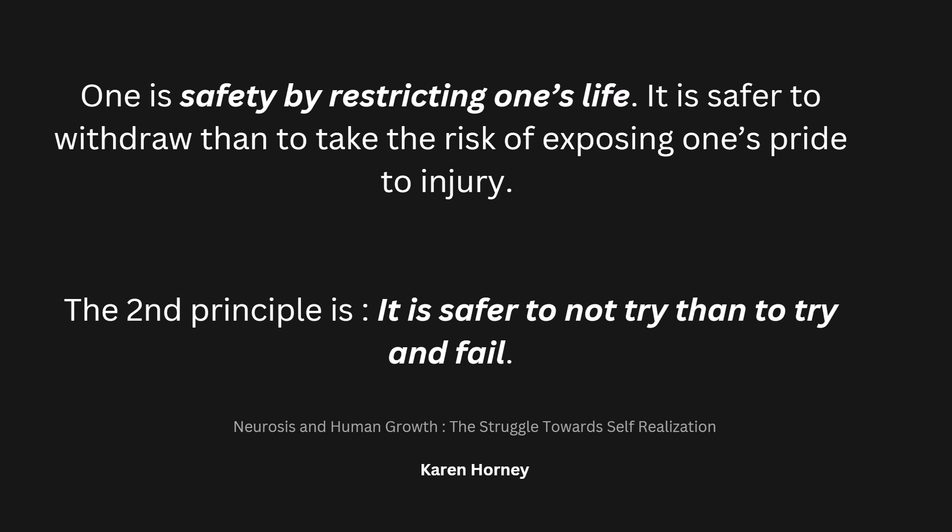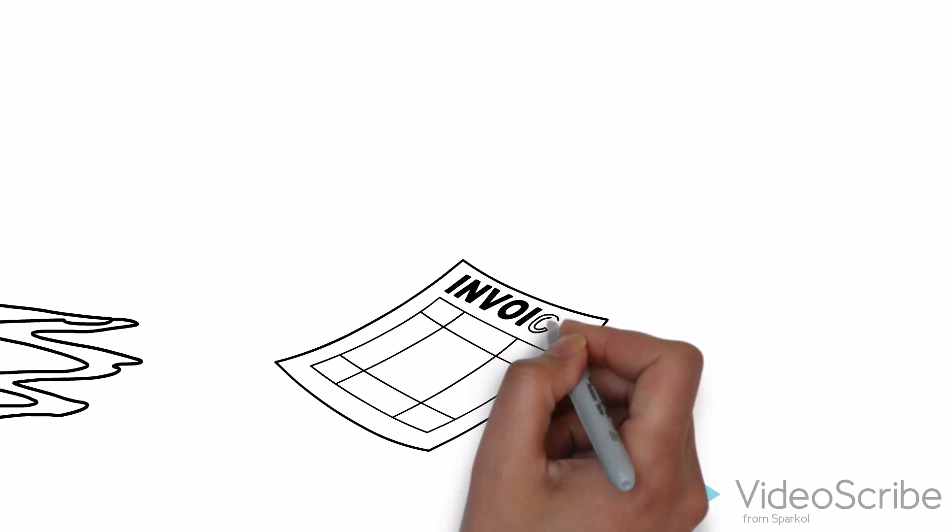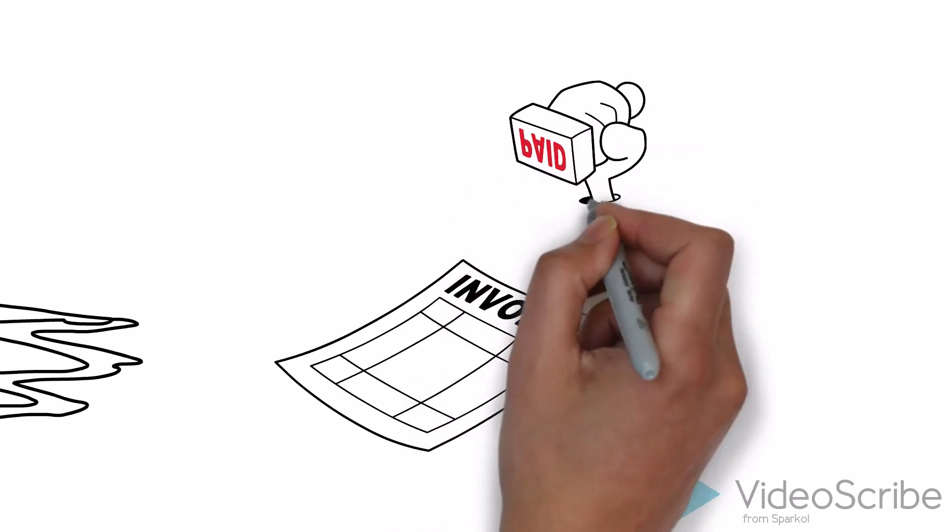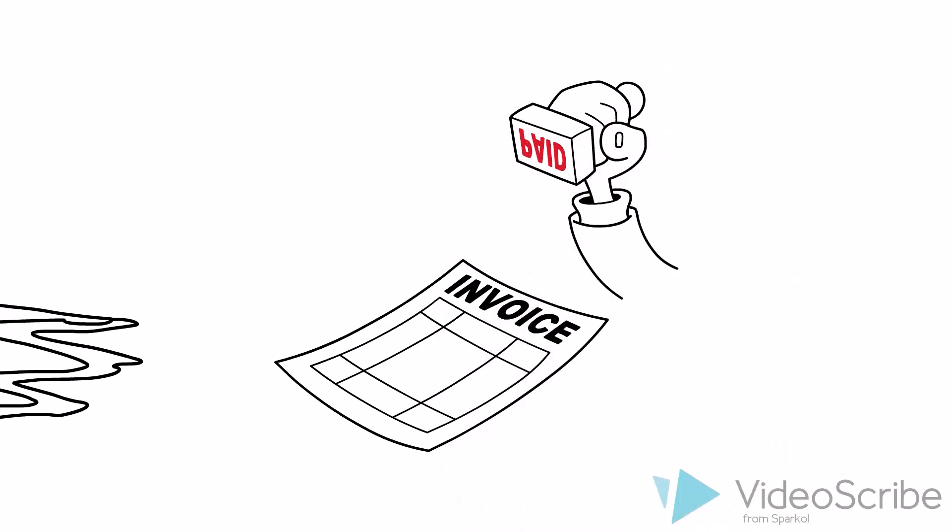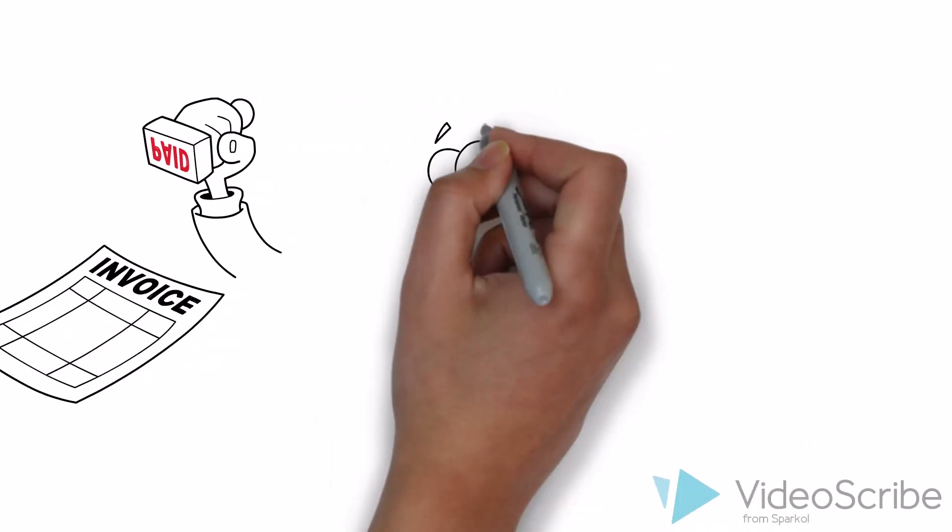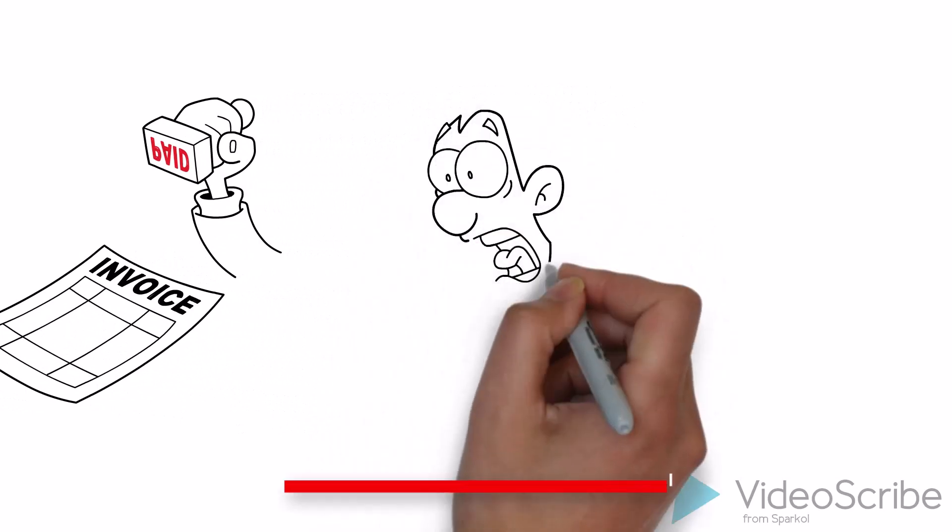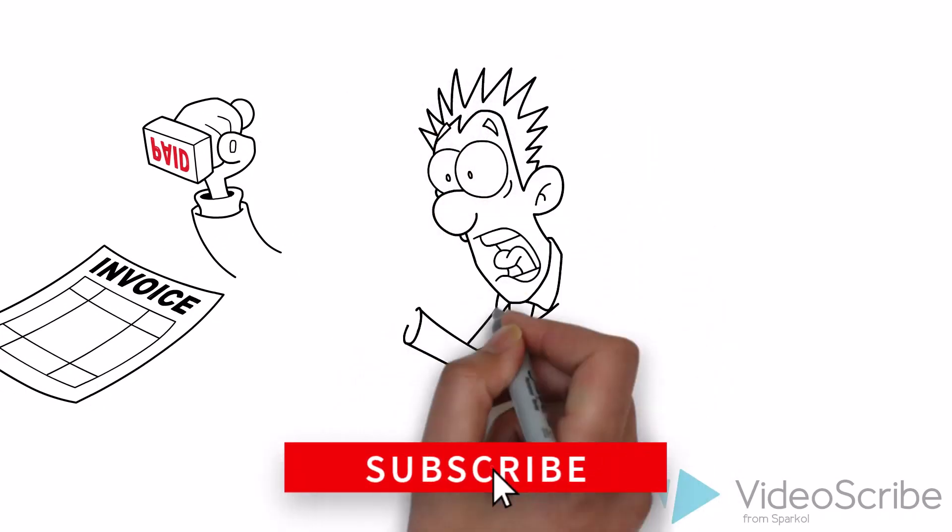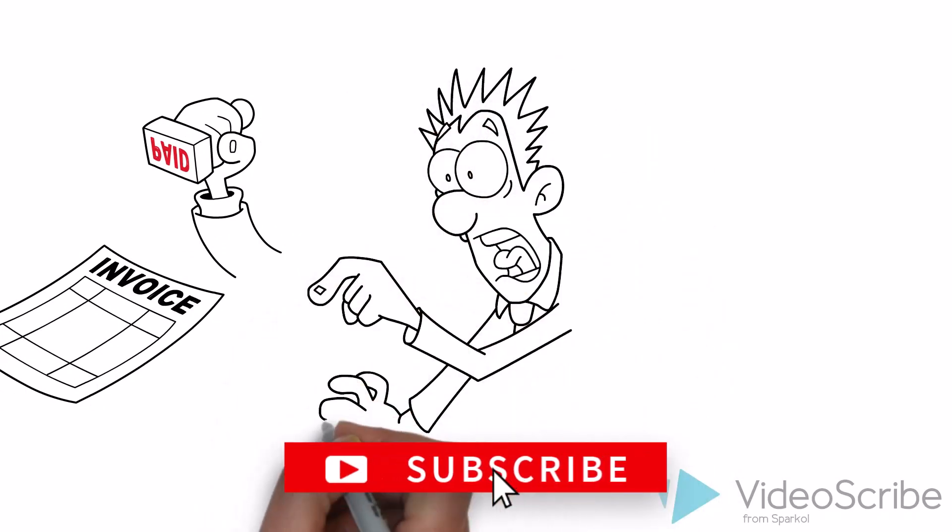The second principle is it is safer to not try than to try and fail. This gives a stamp of finality because the person does not get a chance of overcoming whatever difficulties they have. Although this will hurt the person in the long run, the person is only interested in the immediate danger of trial and error.